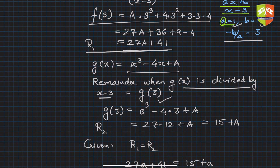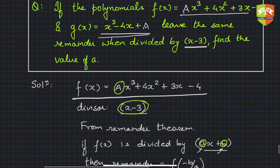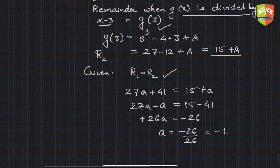You get the second remainder R₂ = 15 + A. It's given that both leave the same remainder, so if you divide this expression by (x - 3) and this polynomial by (x - 3), they leave the same remainder. The remainders can be equated—both are the same.